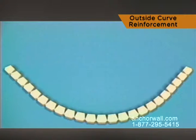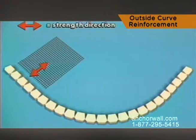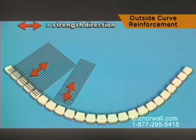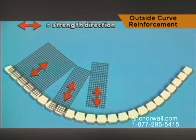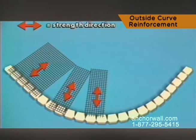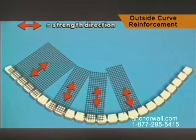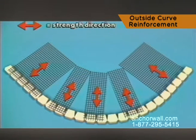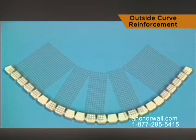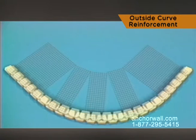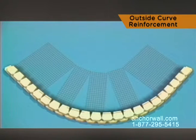Cut your reinforcement to the design length specified in your wall plan. Lay sections of reinforcement within one inch of the face of the wall, with the strength direction perpendicular to the wall face. To avoid overlapping reinforcement, separate each section. Then place the next course of blocks and mark the backs of the blocks to identify unreinforced areas.